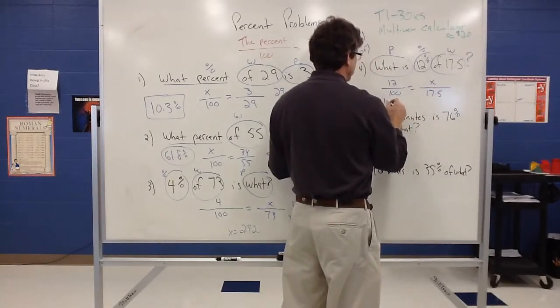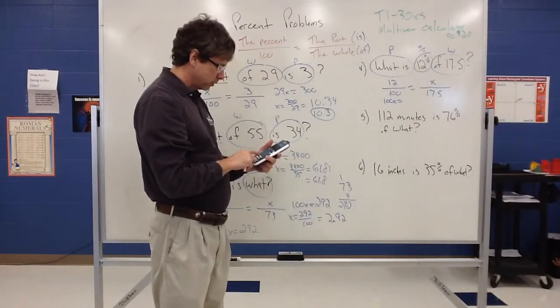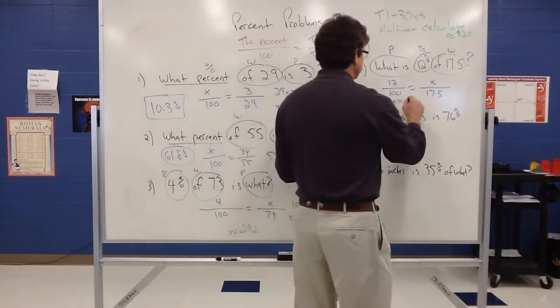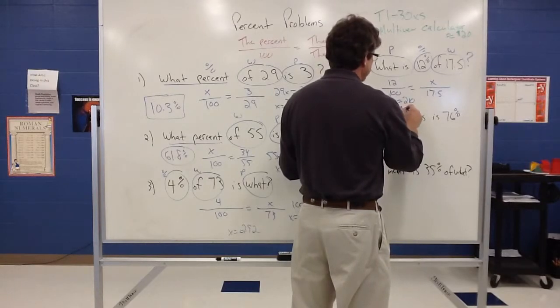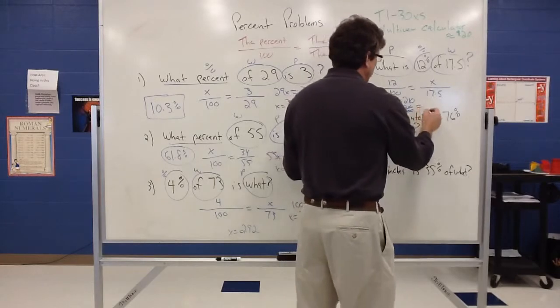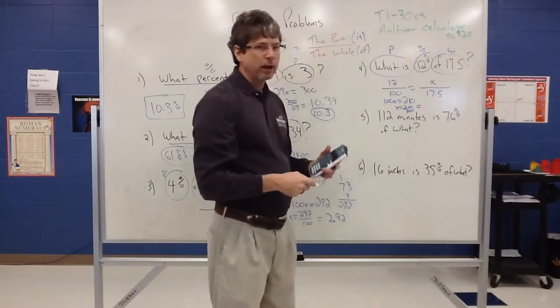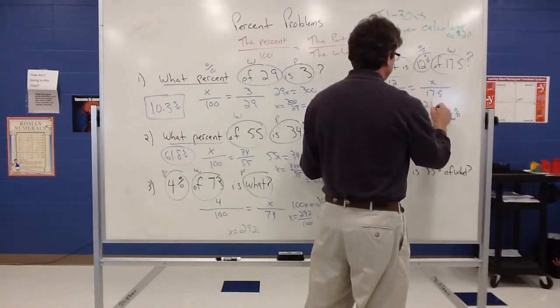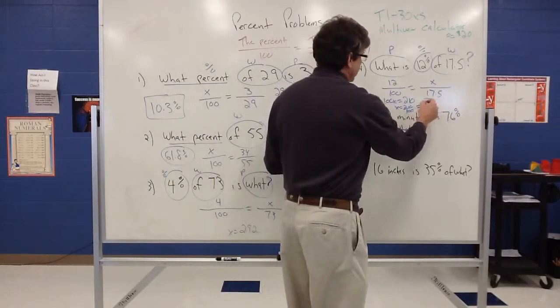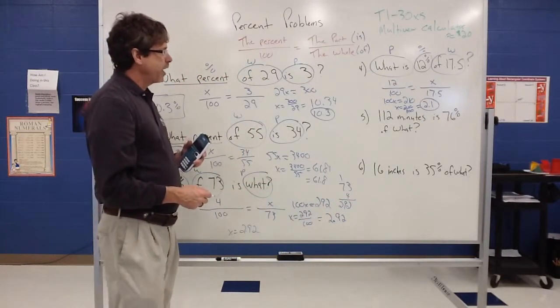So I'm going to have then 100X equals, and 12 times 17.5, I'll let the calculator do that. We're getting 210. And then I've got to divide by 100, so 210 is being divided by 100. And we know that dividing by 100 is just moving the decimal two places to the left, so I really don't need my calculator for that. That's going to change it to 2.1, so X equals 2.1 would be my answer to that one. I may want to circle that since that's getting kind of busy.